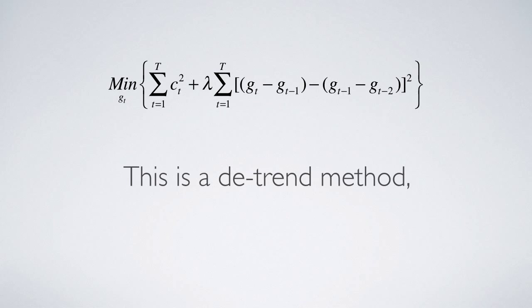This is a de-trend method widely used in time series statistics to test random walk, not a smoothing one for forecasting.